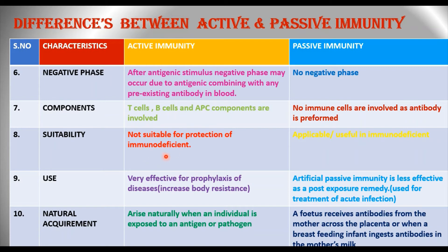Regarding suitability: active immunity is not suitable for protection of immunodeficient people, whereas passive immunity is applicable and useful in immunodeficient individuals — mainly those with severe immunocompromised diseases. Active immunity is very effective for prophylaxis of diseases, increasing body resistance, whereas artificial passive immunity is less effective as a post-exposure remedy and is mainly used for treatment of acute infections.